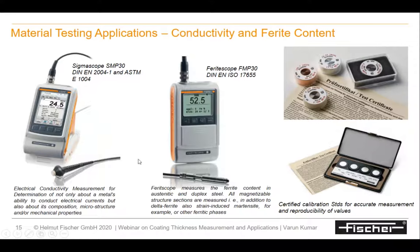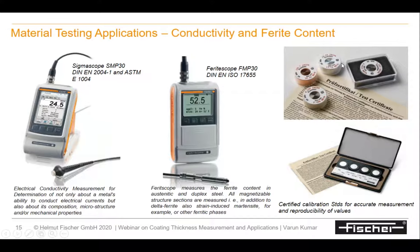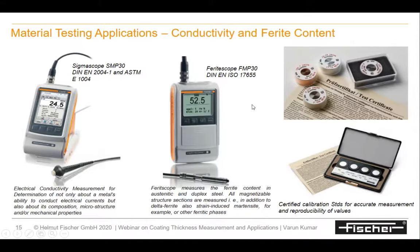Both the Sigma Scope and Ferrite Scope are successful largely because of the calibration standards Fisher provides. The Sigma Scope comes with a 14-set standard meeting Boeing requirements. The ferrite calibration set covers the entire measurement range. Fisher's own calibration laboratory in Germany prepares and calibrates these standards in-house. Customers can also send their standards to be calibrated at this facility.